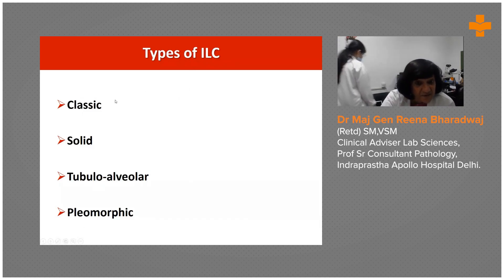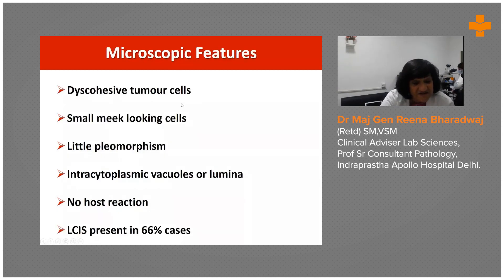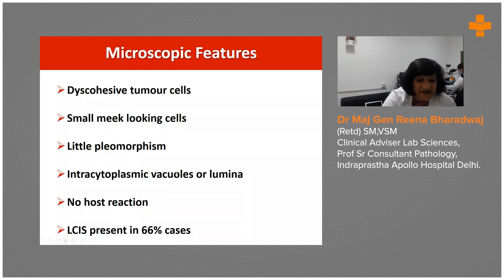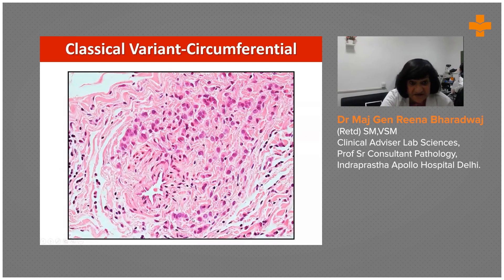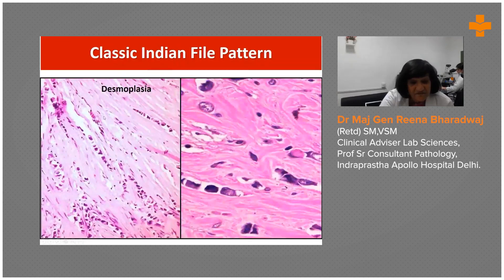The variants of invasive lobular carcinoma include the classical type, solid, tubuloalveolar, and the pleomorphic. They are discohesive cells — small, meek-looking, with very little pleomorphism. They show intracytoplasmic vacuoles and do not produce a host reaction. Typically they don't produce many TILs. LCIS is often present in around 66% of cases. This is the circumferential targetoid growth of lobular carcinoma cells growing all around the ducts — the bullseye pattern.